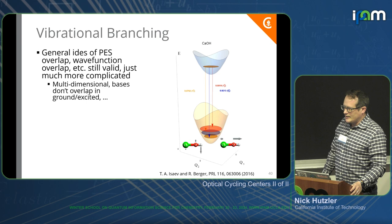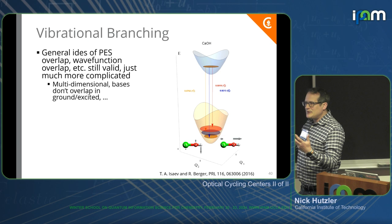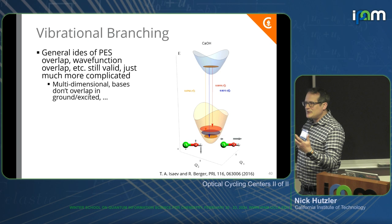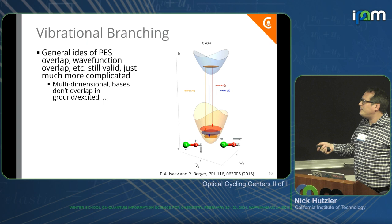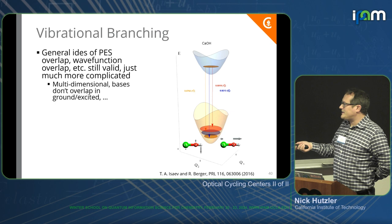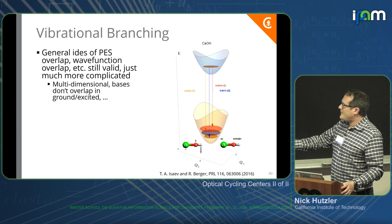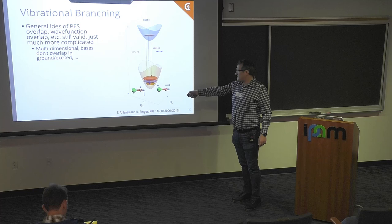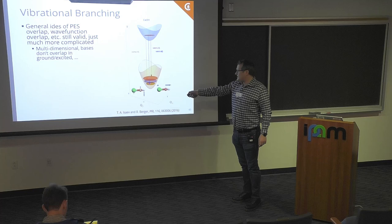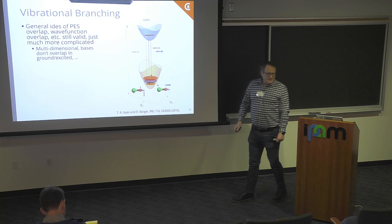There's a very similar conceptual idea of potential energy surface overlap in these molecules — the excited and ground potential energy surfaces overlap very well — except now it's more complicated because it's a multidimensional thing. For something like this with two relevant degrees of freedom, you can sort of draw a surface, but these can rapidly become multidimensional, hard-to-visualize things. The Q coordinates are the bending coordinate and the stretch coordinate for this plot, because those are the two relevant ones.